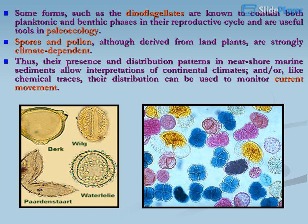Spores and pollen, although derived from land plants, are strongly climate dependent. Thus, their presence and distribution patterns in near-shore marine sediments allow interpretations of continental climates, and their distribution can be used, like chemical traces, to monitor current movement.